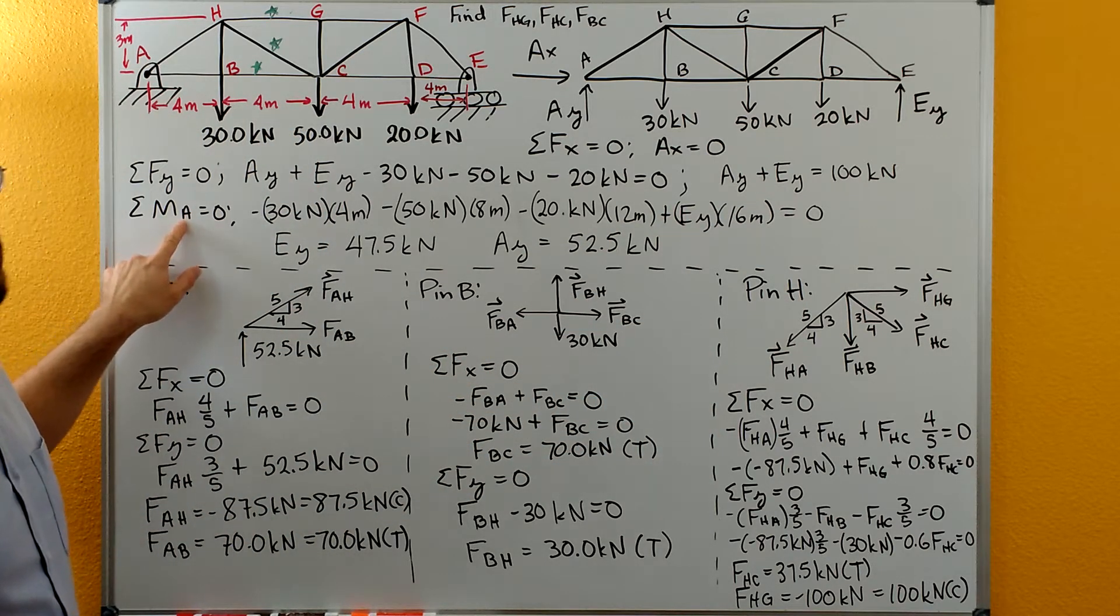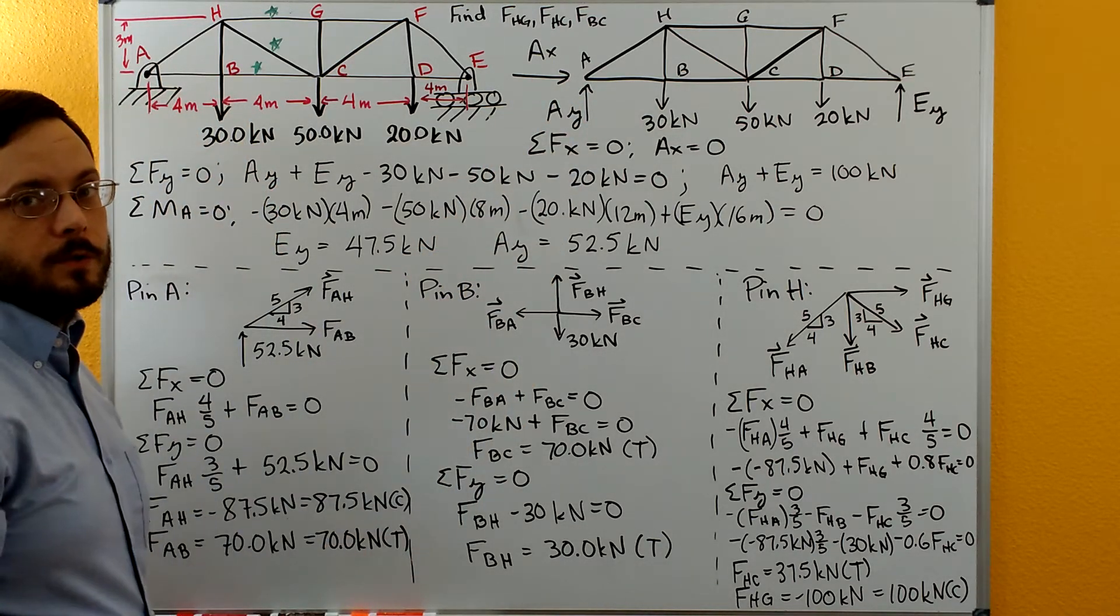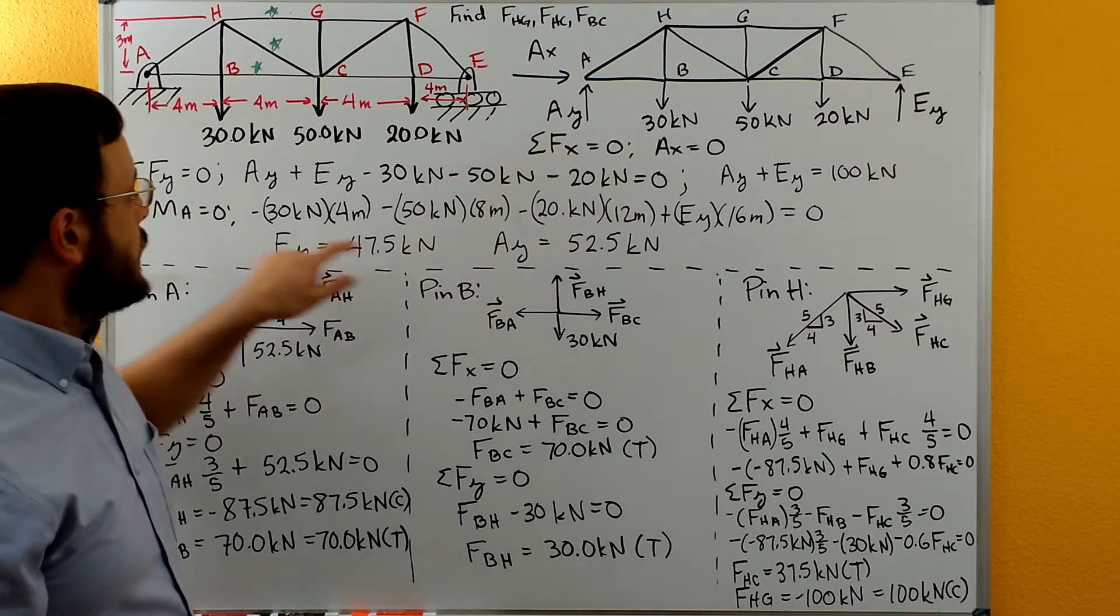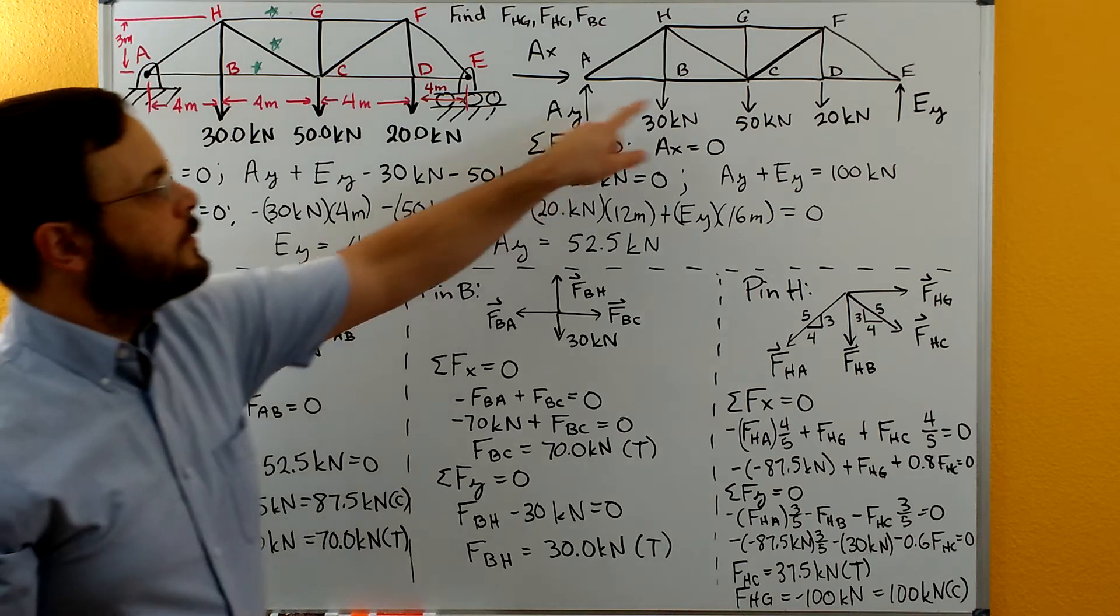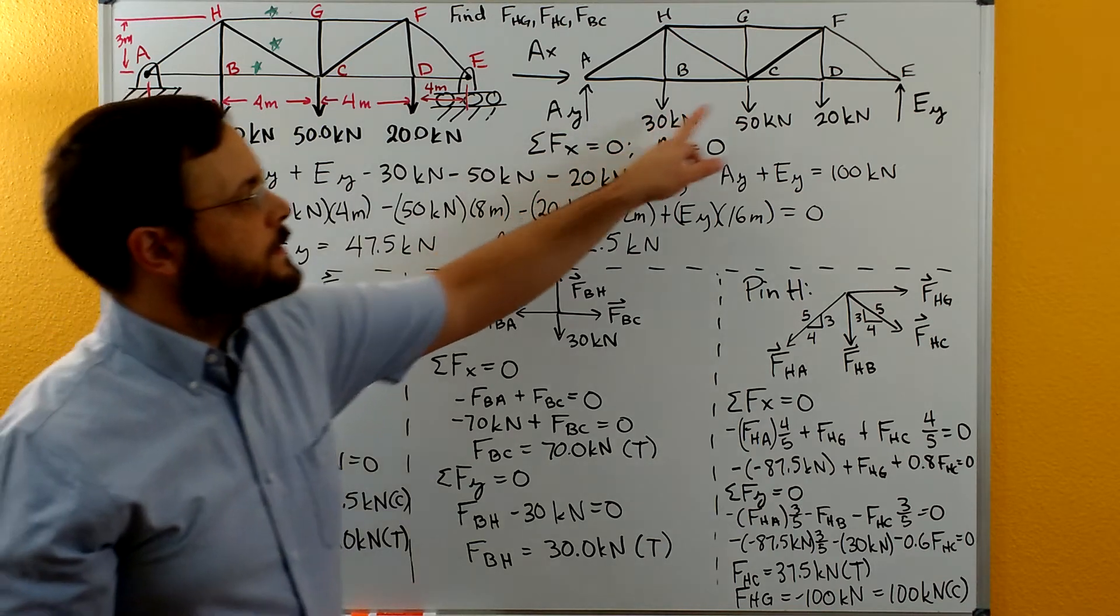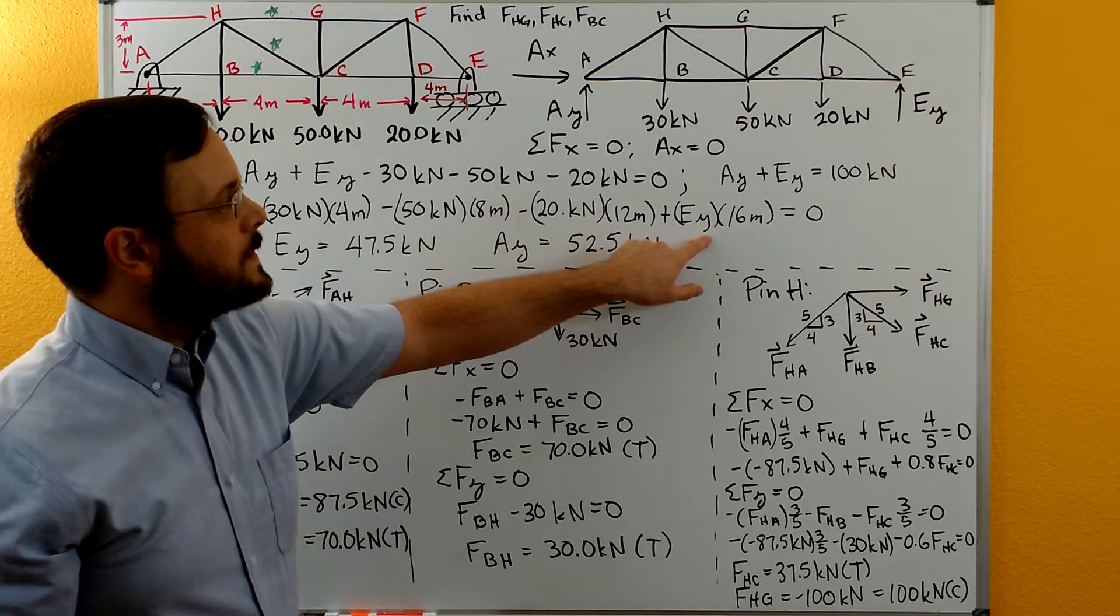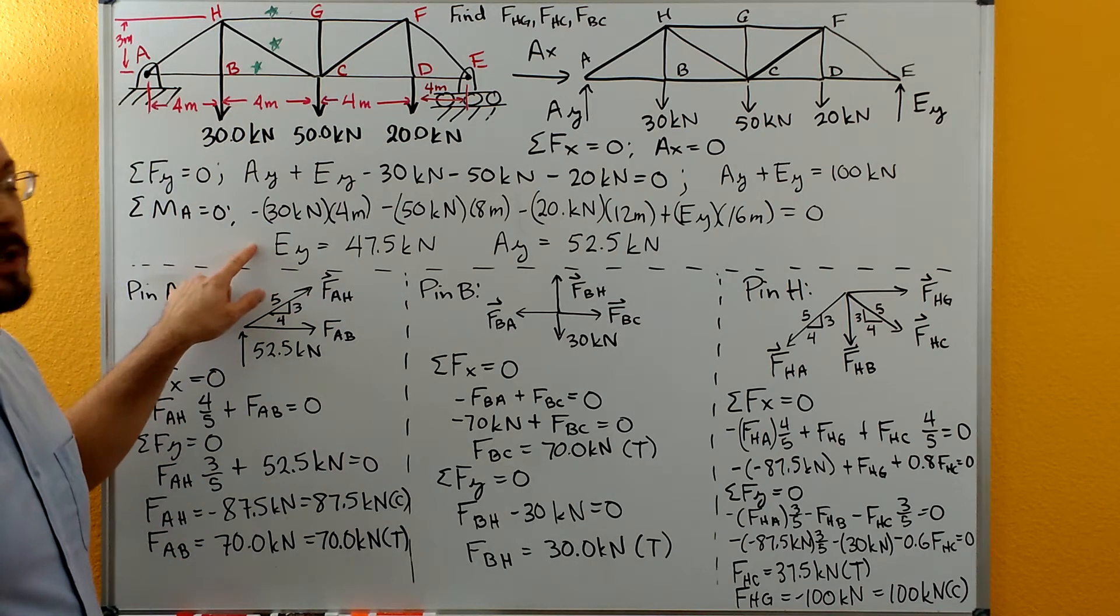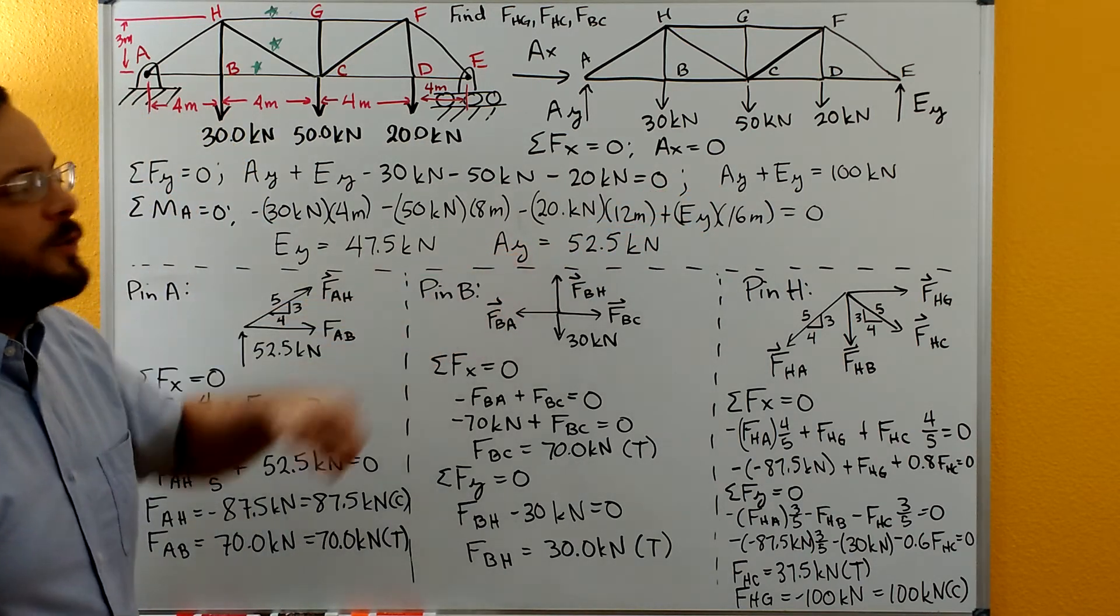Sum of moments about A: AX and AY go through A so they contribute no moment about A. The 30 kilonewton force sits at four meters over creating a negative moment about A. The 50 kilonewton force is another four meters over, so eight meters total, also negative moment. The 20 kilonewton force is another four meters over, so 12 meters total, also negative. Then we have plus EY and EY is the full 16 meters over. From here we can solve for EY, plug it back into our equation AY plus EY equals 100, and then solve for AY.